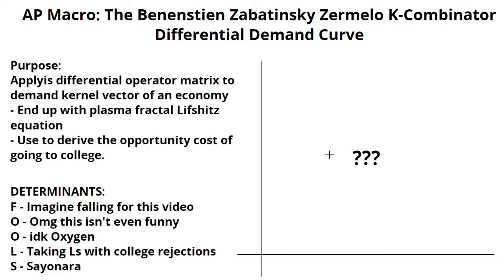This is the Beninstein-Zabantinsky-Zermelo-K Combinator Differential Demand Curve, and yeah, the name is quite easy to remember. The most important curve in all of economics — if you don't know this curve, why are you even taking this course? Just drop out now. Do it. The Beninstein-Zabantinsky-Zermelo-K Combinator Differential Demand Curve. And yes, you must say the full name during the exam or you will get a 3.